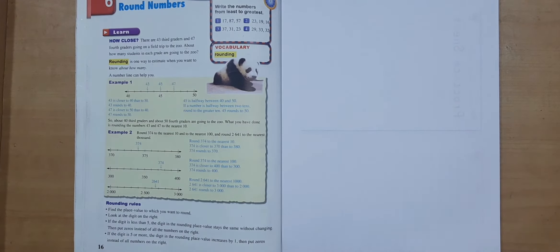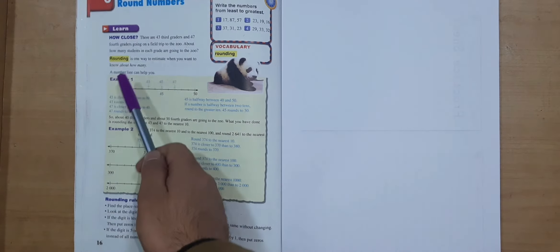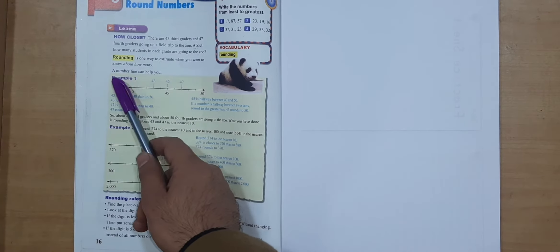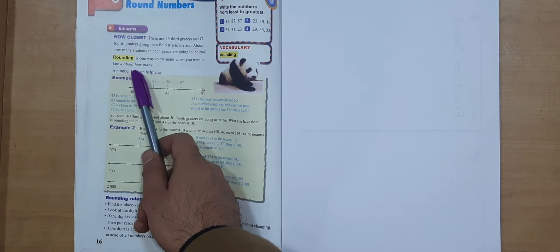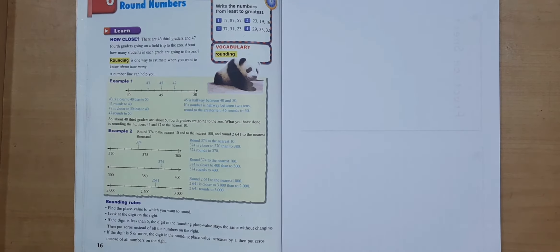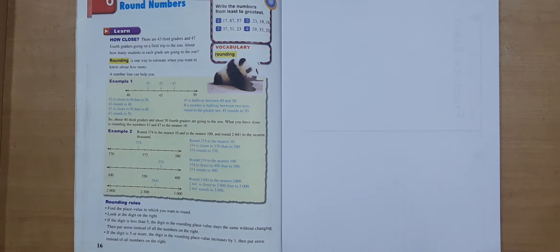First of all, as a point of departure, let us know about what rounding is. Rounding is one way to estimate when you want to know about how many. Remember, it's one way to estimate when you want to know about how many.